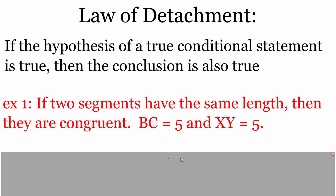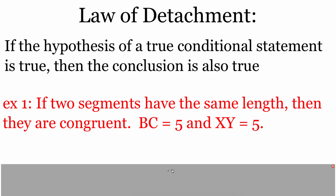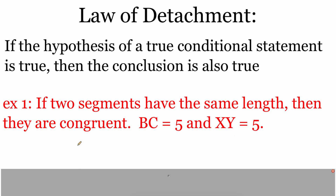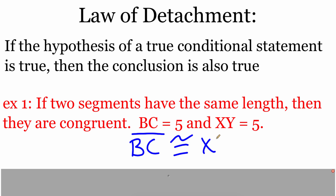We're going to look at the example that says if two segments have the same length, then they are congruent. It also says that the length of BC is going to be 5 and the length of XY is going to be 5. Based on this hypothesis, these two segments have the same length. BC is 5 and XY is 5, so the conclusion we can make is that segment BC is congruent to segment XY. Those things have the same length, so they have to be congruent.